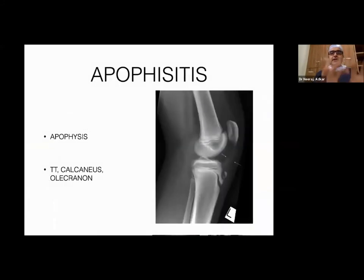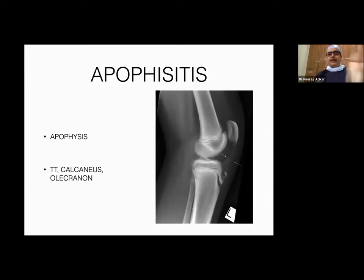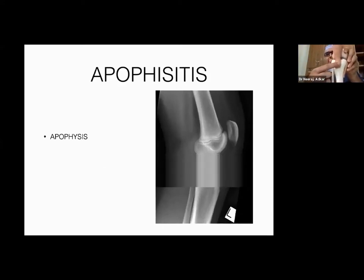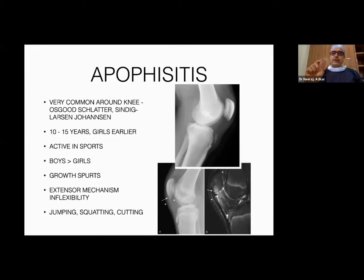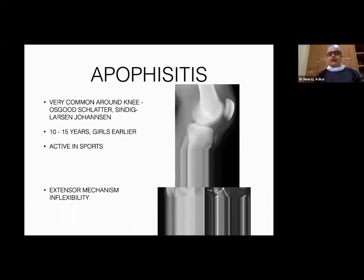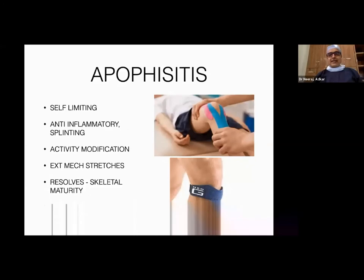A common condition is apophysitis — Osgood-Schlatter disease — typically presenting in a 12-to-14-year-old boy or girl with pain at the front of the knee joint. It is caused by partial avulsion of the patellar ligament from the parent bone. It can be very well treated with splinting, rest, and medication — keeping the knee straight and avoiding knee flexion for three to four weeks, with complete recovery expected.